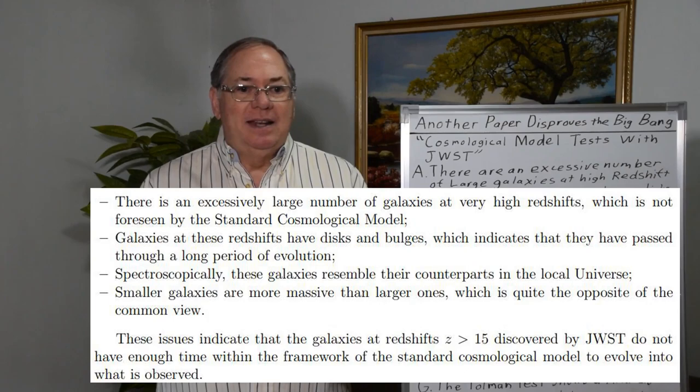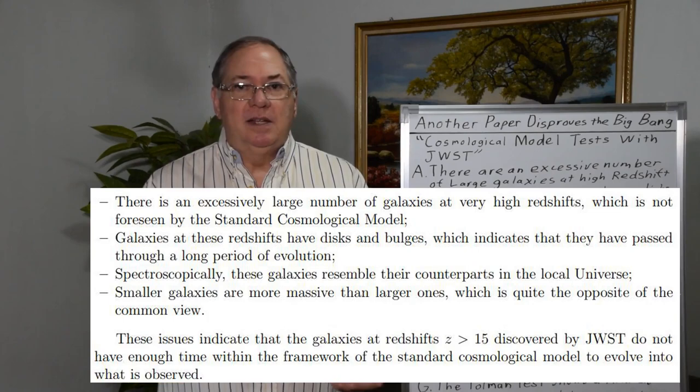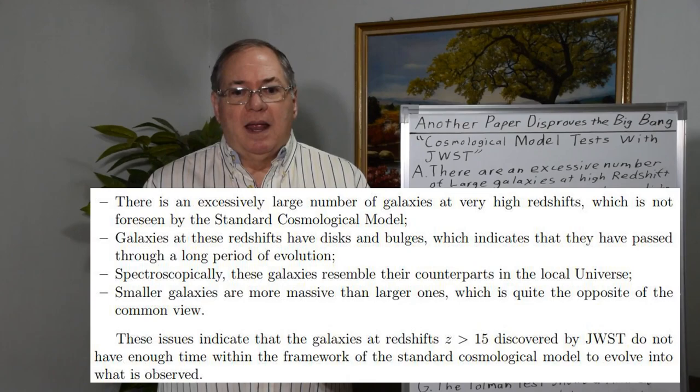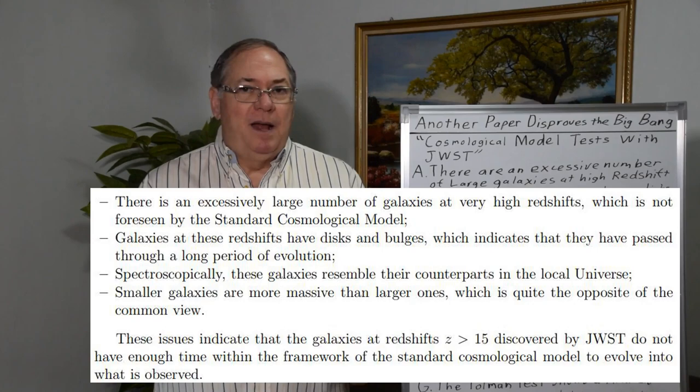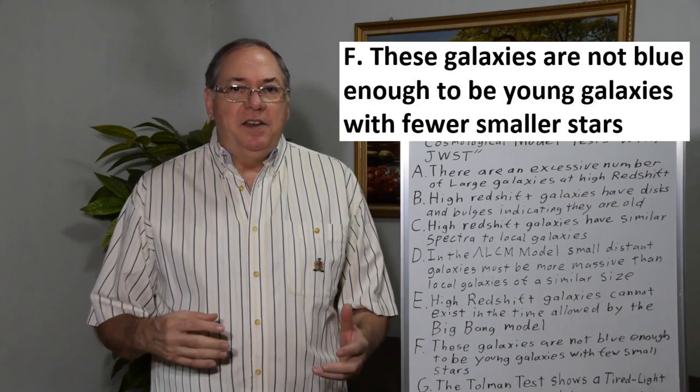In the Lambda CDM model, the Big Bang model, these galaxies must be small, distant, but still massive, which is not consistent with our models of galaxy formation. These high redshift galaxies make it impossible for them to form during the timeline of the Big Bang model. So that's how the paper starts.